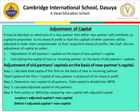For adjustment of old partners' capital on the basis of new partner's capital, there are four steps. Step 1: calculate total capital of the firm — total capital equals capital of new partner multiplied by the reciprocal of his share in profit. So if a new partner is admitted for one-fourth share, the reciprocal is 4/1. Step 2: determine new capital of old partners by dividing total capital in the new profit sharing ratio.